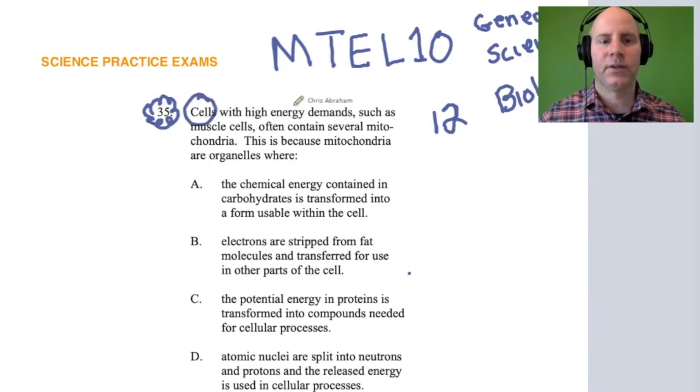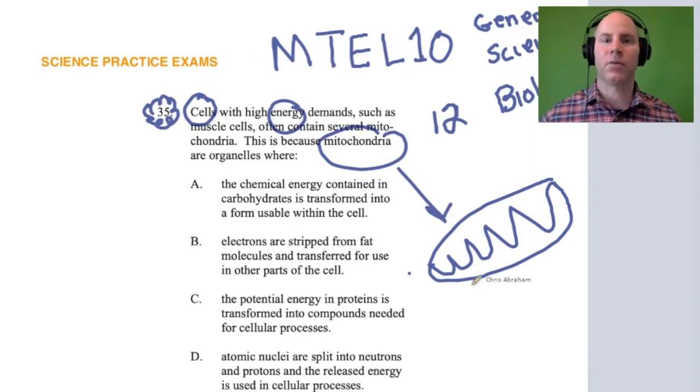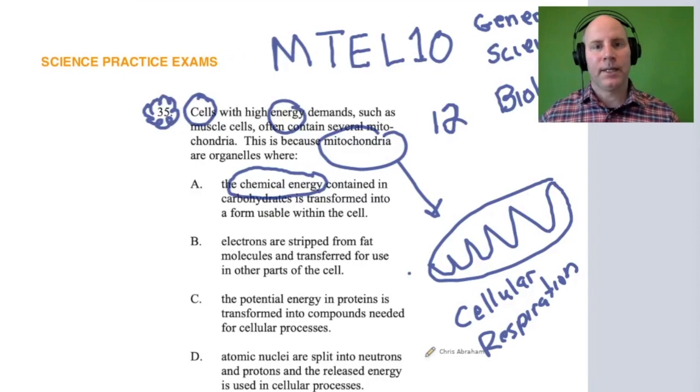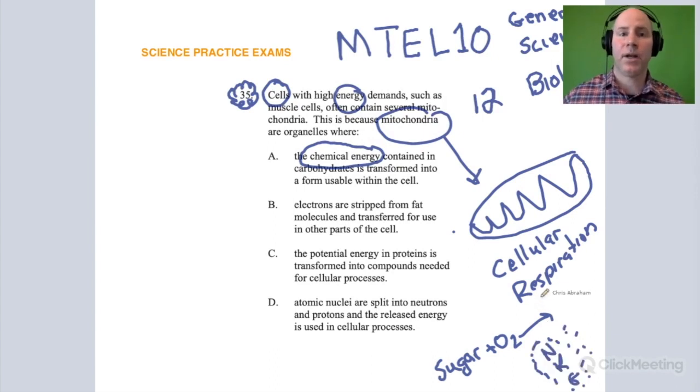We're talking about cells, energy, and mitochondria. We know that in mitochondria, cellular respiration takes place. In cellular respiration, the mitochondria take sugar and oxygen and transform it into energy for the cell, giving off a byproduct of water and carbon dioxide.